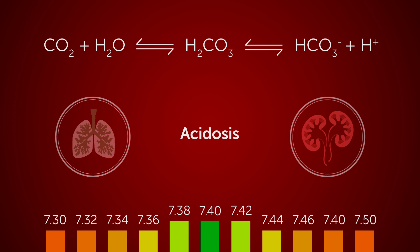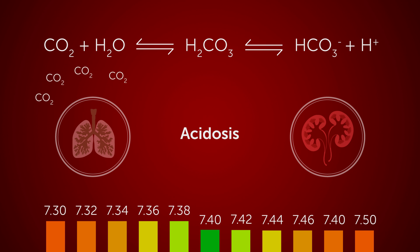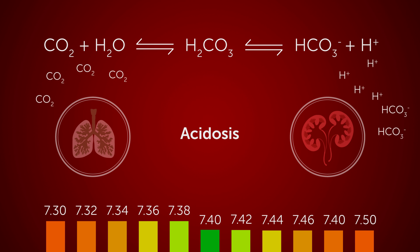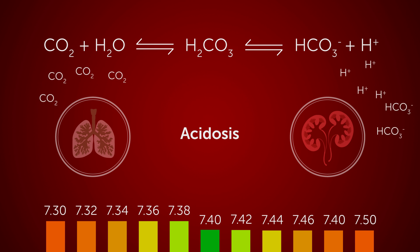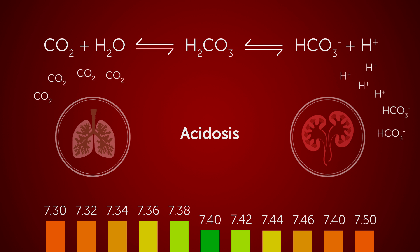Acidosis occurs when pH falls below 7.38, either due to increased CO2 pressures in the blood, which shift equilibrium to produce more H+ in the blood, or due to increased metabolic activity such as in muscle cells, which dumps more H+ and CO2 into the blood as well.